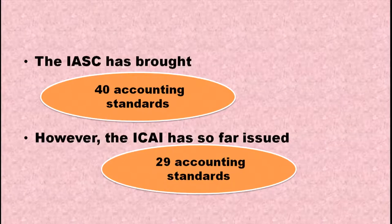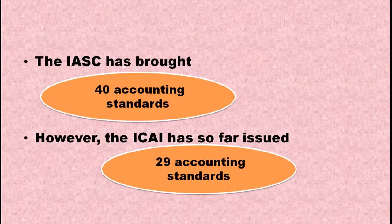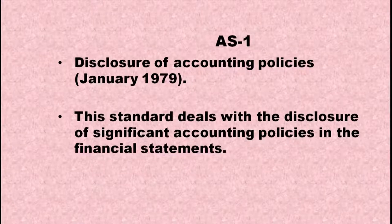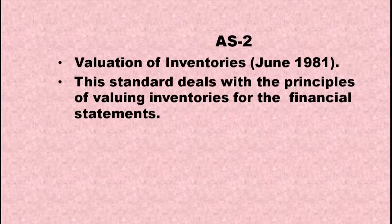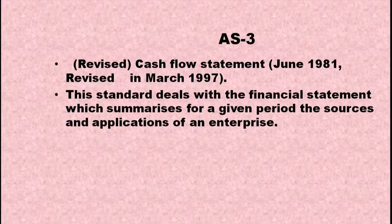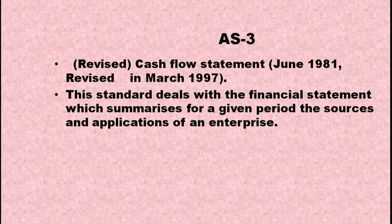The IASC has issued 40 accounting standards. The Institute of Chartered Accountants of India has issued 29 accounting standards. AS1 discloses accounting policies — this standard deals with the disclosure of significant accounting policies in financial statements. AS2 deals with the principles of valuing inventories for financial statements. AS3 is about the cash flow statement — it summarizes for a given period the sources and applications of cash of an enterprise.